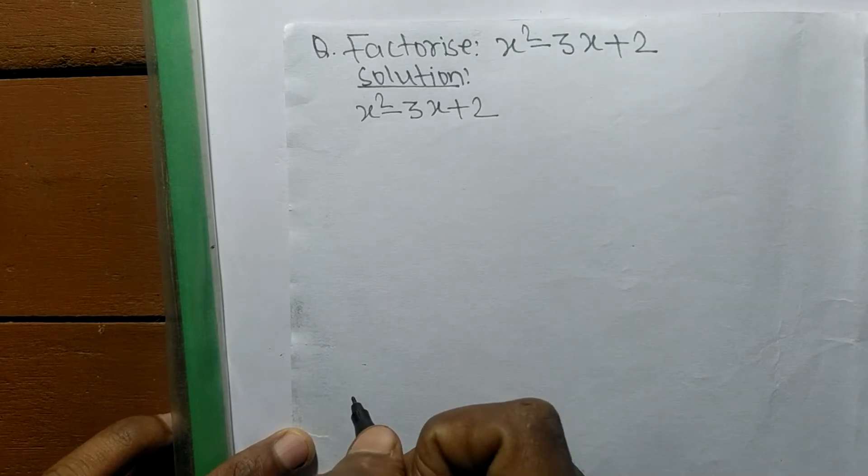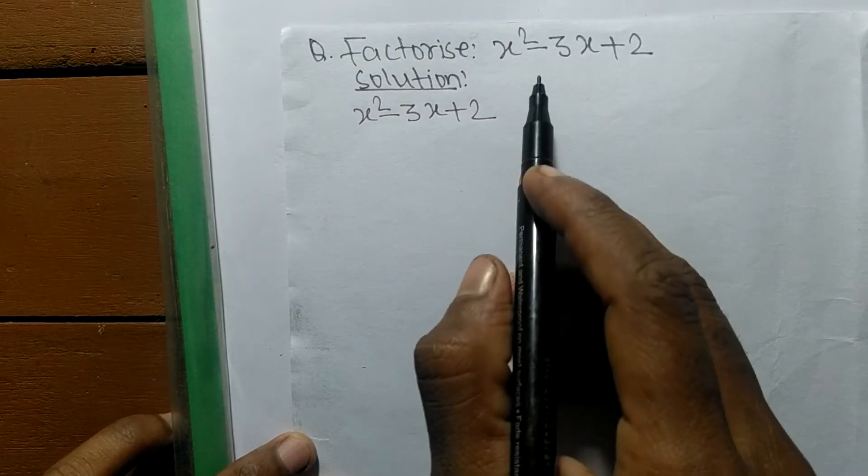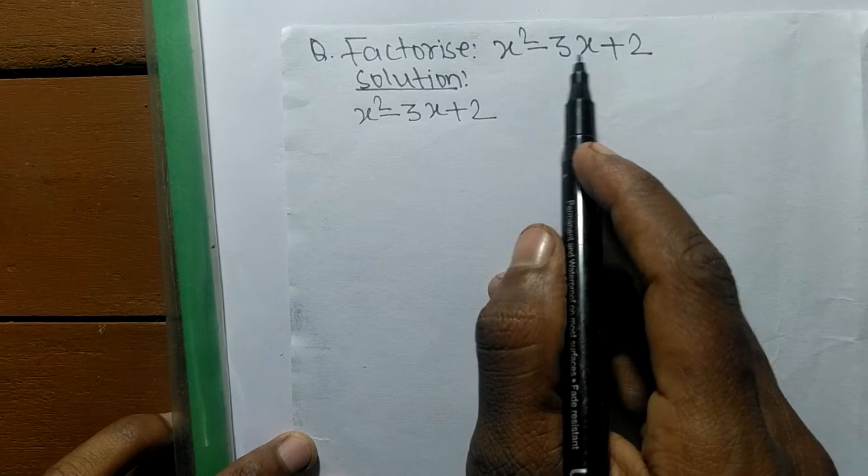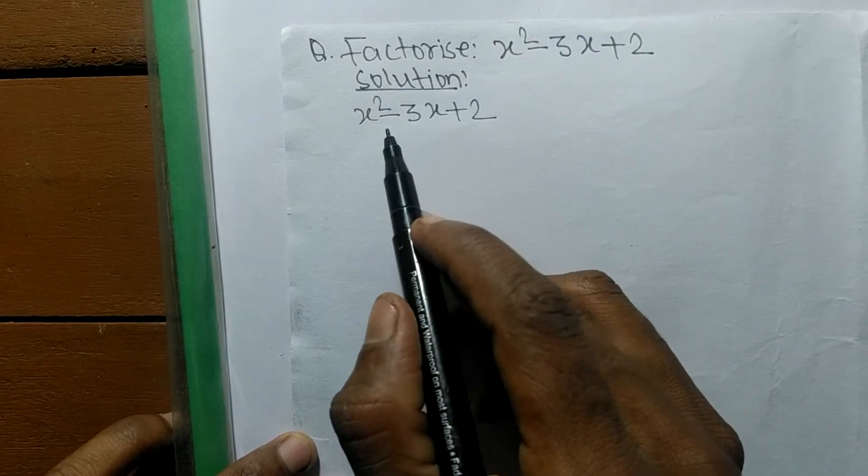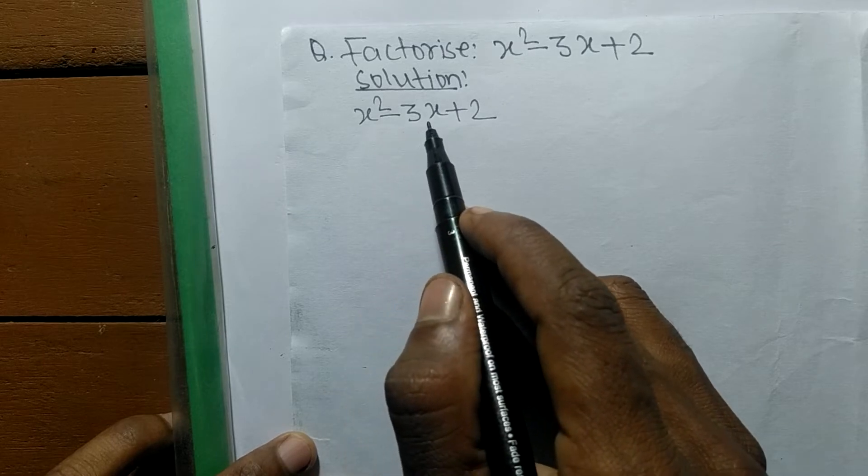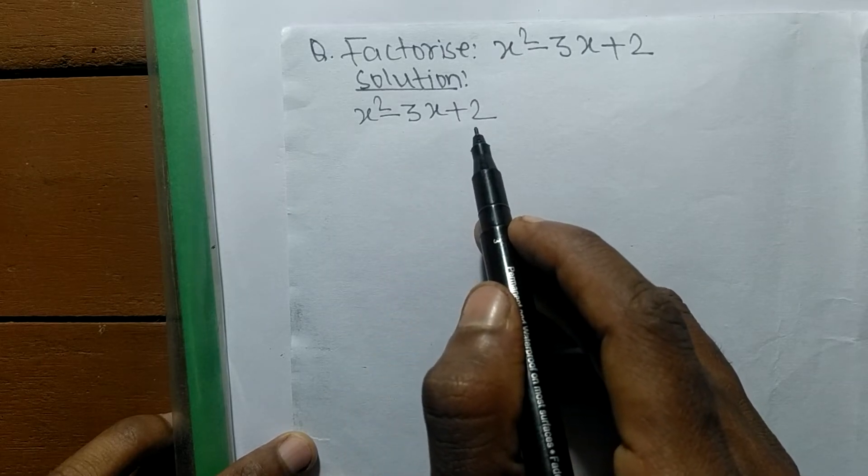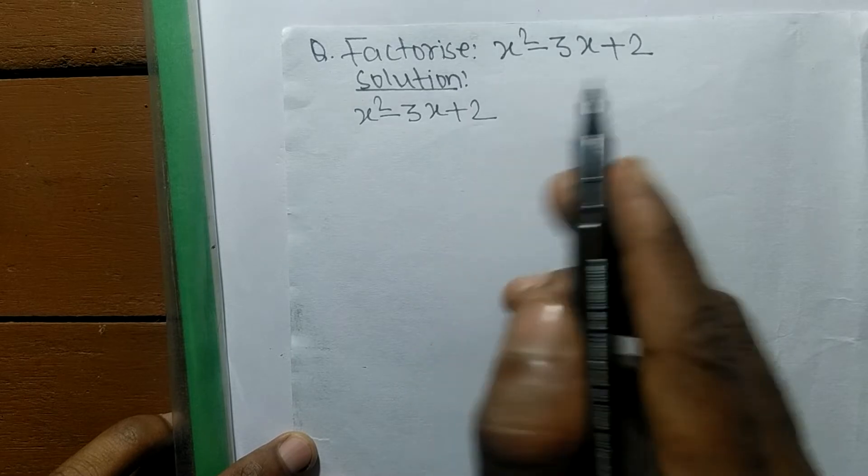So today in this video we shall learn to factorize x squared minus 3x plus 2. For the solution of factorize x squared minus 3x plus 2, first we have to find out the prime factors of 2.